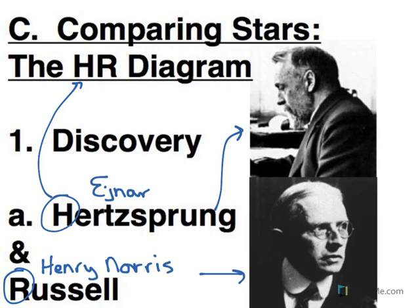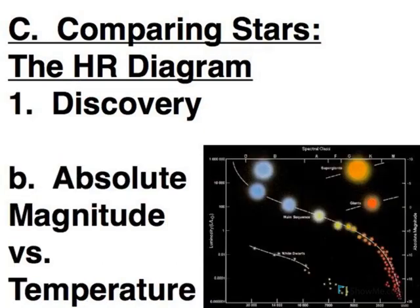So officially it's the Hertzsprung-Russell Diagram, but astronomers are far too lazy to say that over and over again. So we call it the HR Diagram. And what they came up with was this idea of graphing absolute magnitude versus temperature for stars.